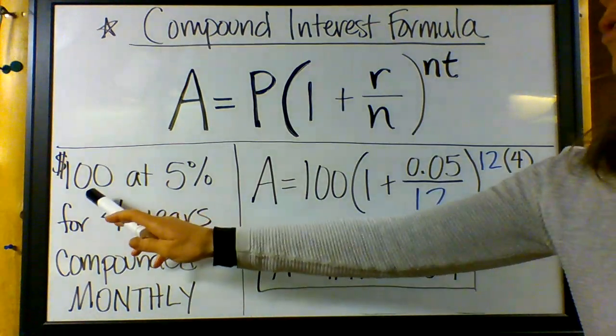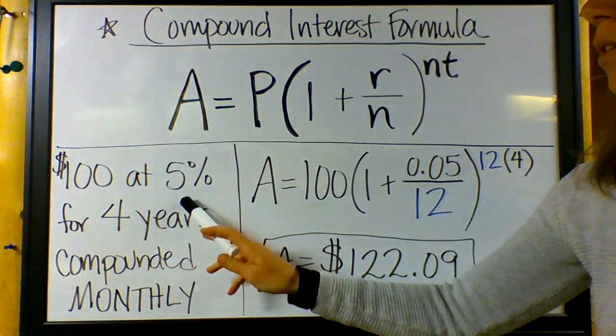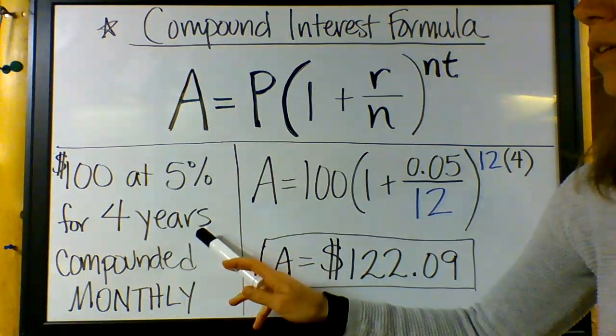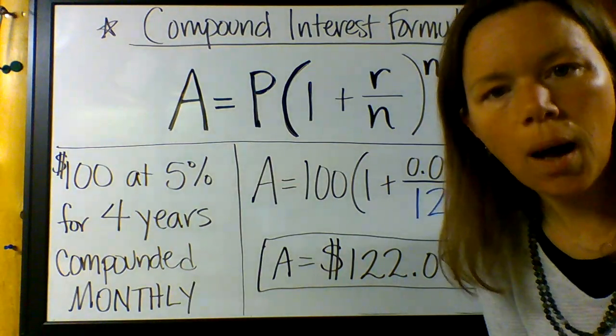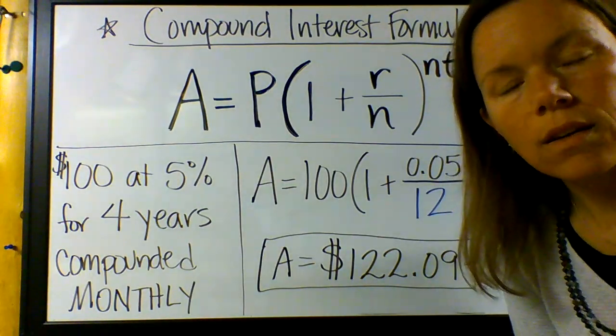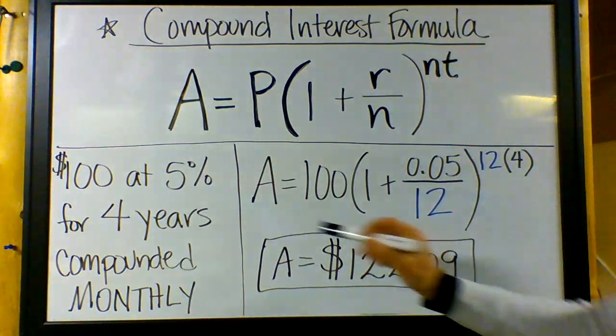I have my same example as yesterday. If you watched yesterday's video, you know that we talked about $100, investing $100 at 5% for four years. But this time we're going to say compounded monthly - that's compounded once at the end of each month, that's 12 times per year.